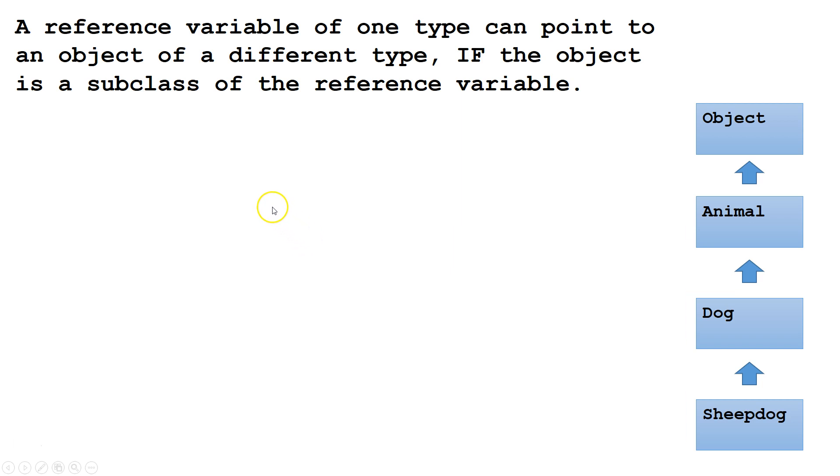A reference variable of one type can point to an object of a different type if the object is a subclass of the reference variable.